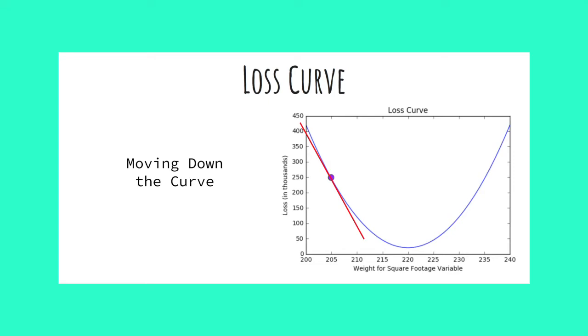Notice in this example, the slope of the tangent line is moving downward. This means we have a negative slope. With negative slope, we need to increase our weight to get nearer to our optimal weight.